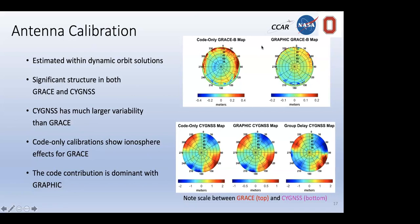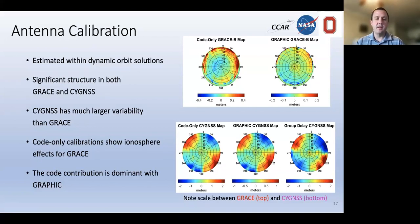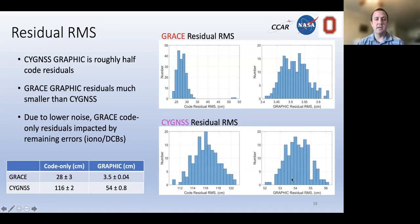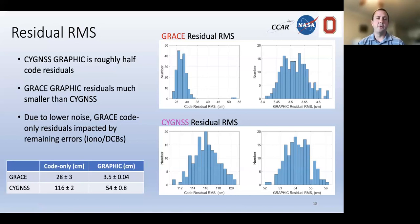On cycle slip detection in carrier phase: no small cycle slips were observed. Large ones were corrected by starting a new arc and estimating a new constant bias. The phase clock-like term makes it difficult to detect small-magnitude cycle slips, but overall the GRAPHIC residual RMS was very consistent, suggesting small cycle slips are not a significant problem for Cygnus.